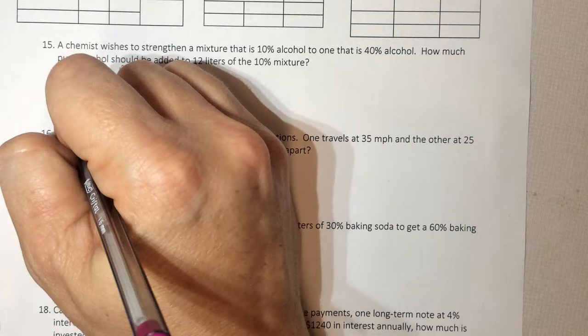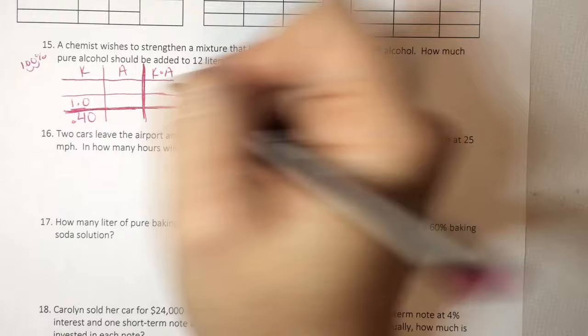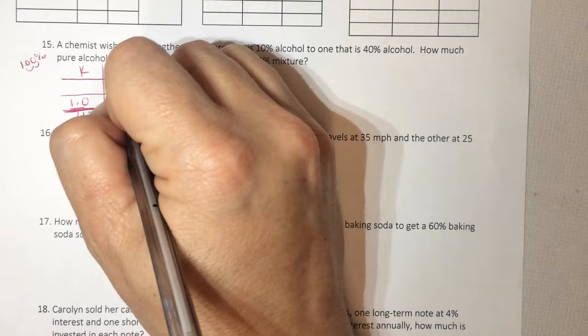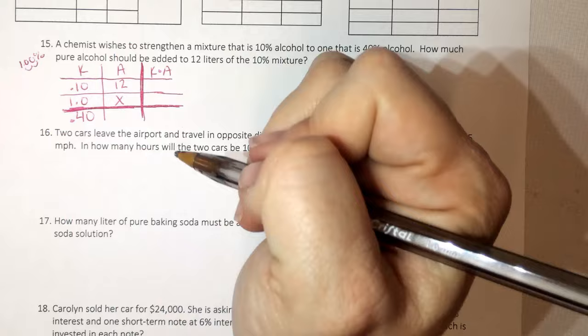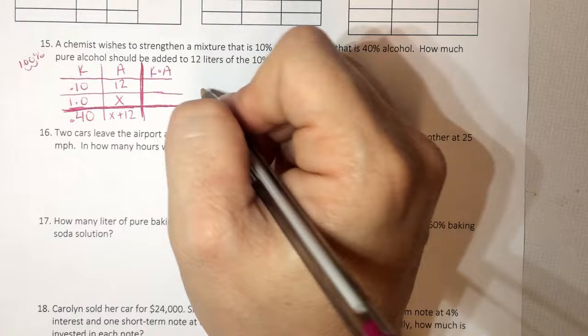Right away, I know I'm mixing pure and 10%. So therefore, I'm creating my 40%. So what I'm creating goes at the bottom. So it says how much pure. Remember, pure is 100%. When I turn that into decimal, it's 1.0. And it says how much, so I don't know. So it should be added to 12 liters of 10%, so 0.10. Don't let that confuse you. And then I don't know the full amount, because I don't know this, so it's just those added. So x plus 12.